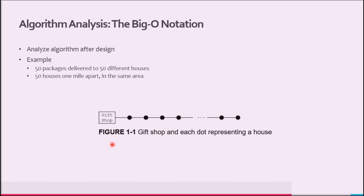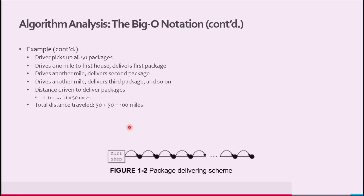In this figure, figure 1-1, each dot represents a house, and the distance between houses is 1 mile. To deliver 50 packages to their destination, one of the drivers picks up all 50 packages, drives 1 mile to the first house, and delivers the first package. Then he drives another mile and delivers the second package, drives another mile and delivers the third package, and so on.